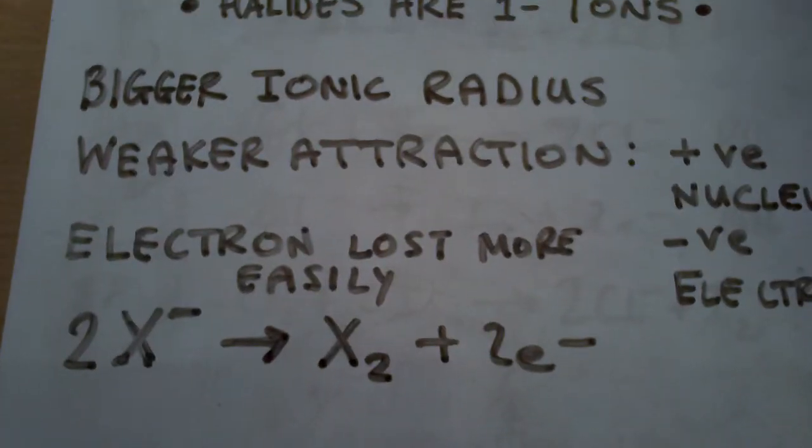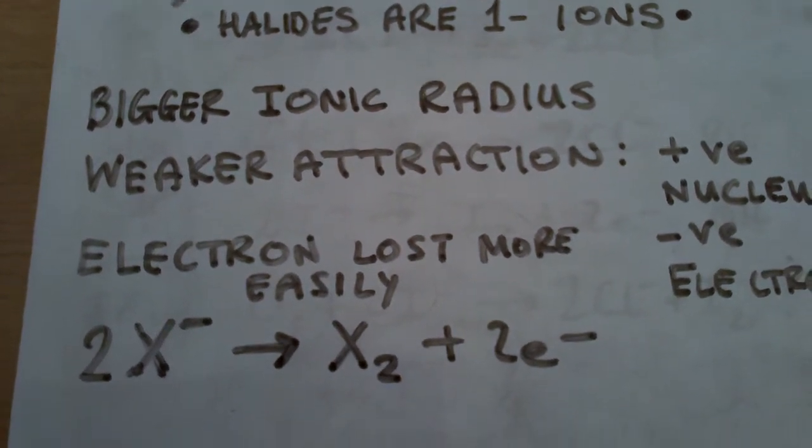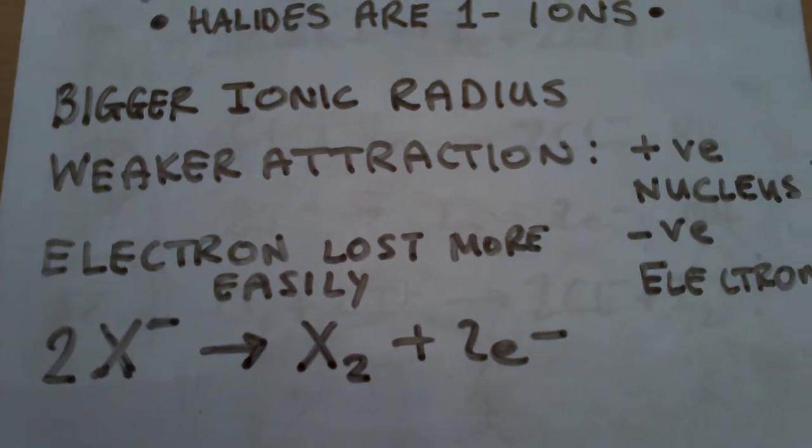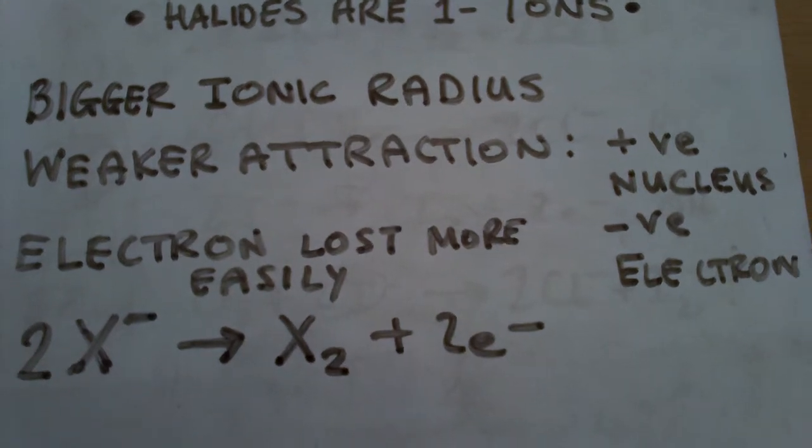And this is a summary: as it has a bigger ionic radius, it has a weaker attraction between its positive nucleus and its negative electron.